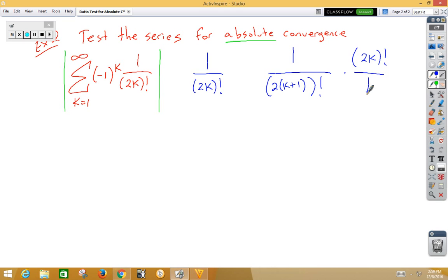If we think about this part here as 2k plus 2 factorial, we can then write 2k plus 2, 2k plus 1, 2k factorial, thus allowing us to cancel out the 2k factorials.